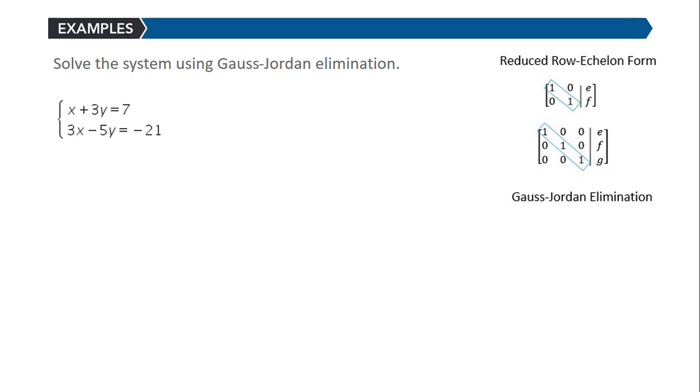In this video we'll solve this system x plus 3y equals 7 and 3x minus 5y equals negative 21 using Gauss-Jordan elimination.